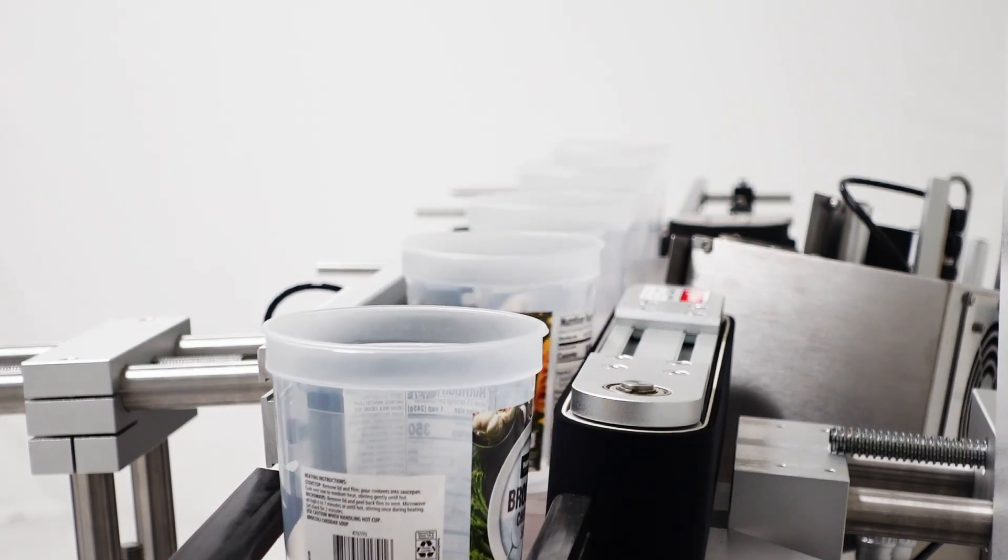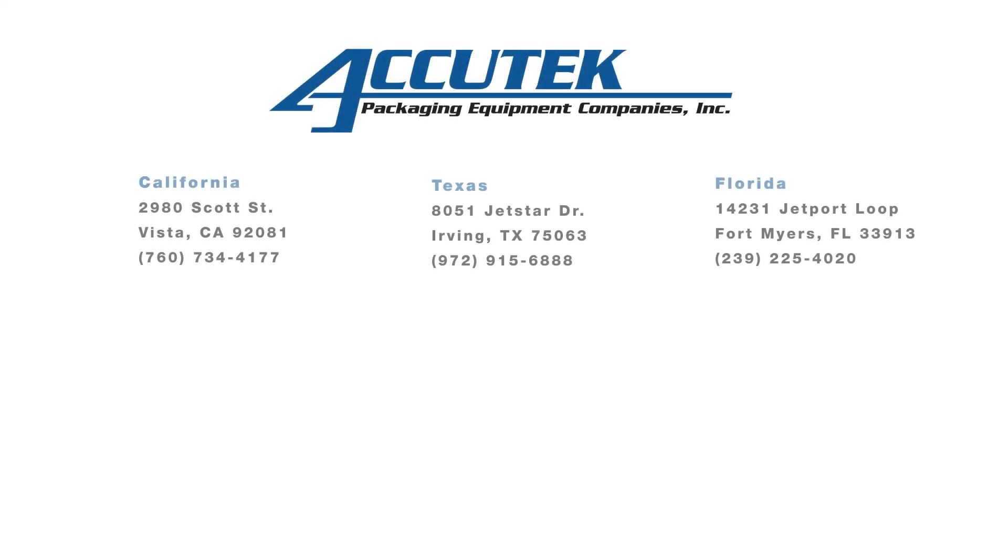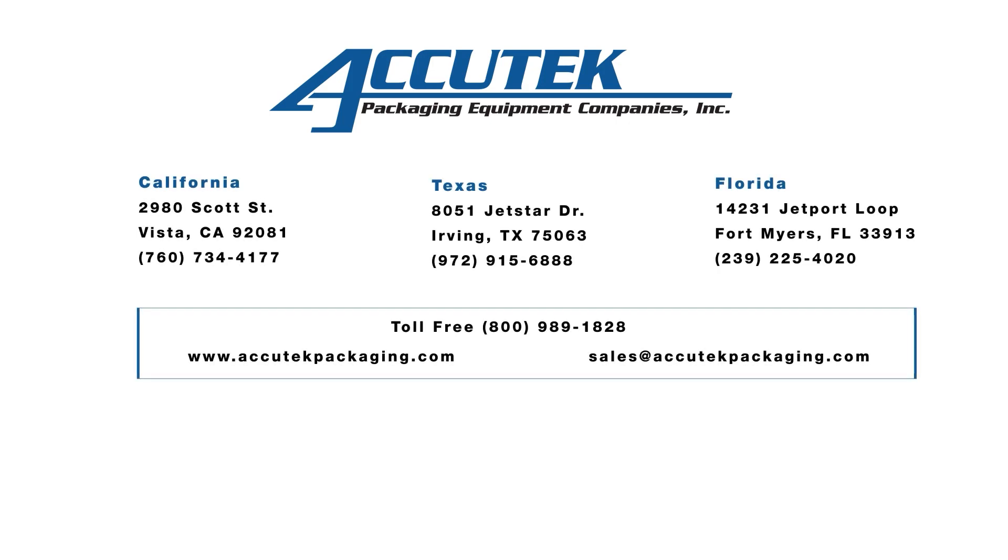The wrap belt rolls the bottle against the pressure plate and presses the label into place around the bottle. The conveyor then moves the labeled bottle past the label head.